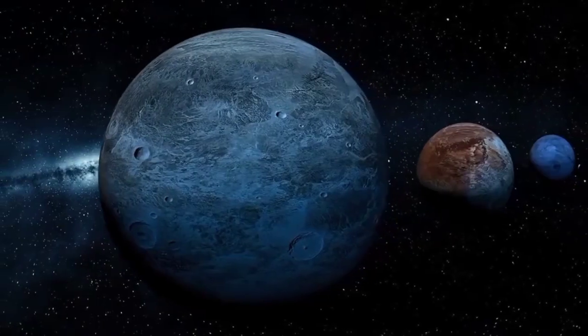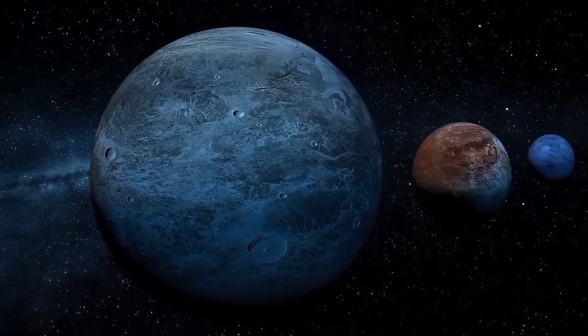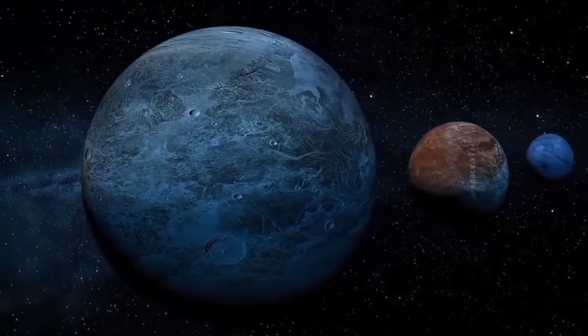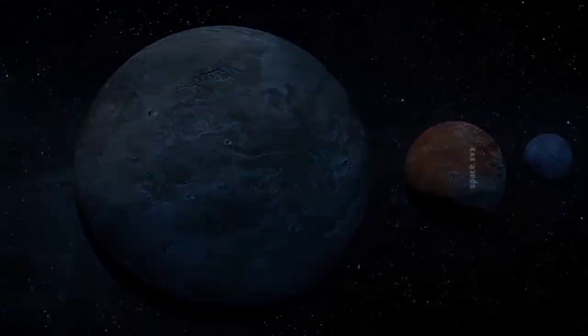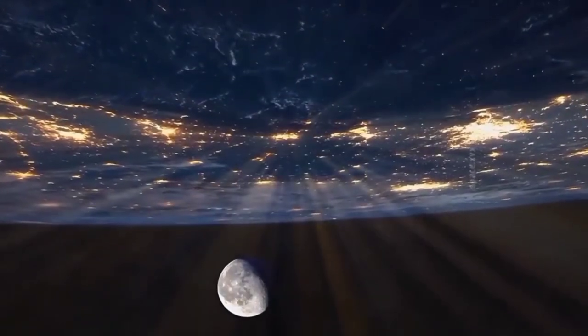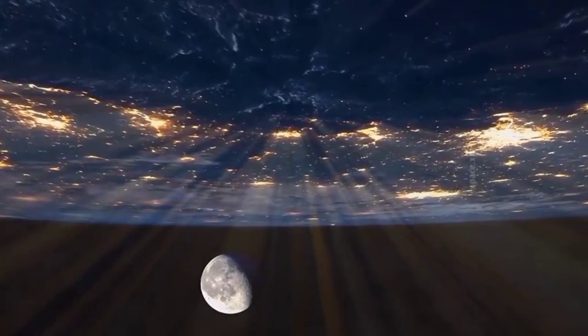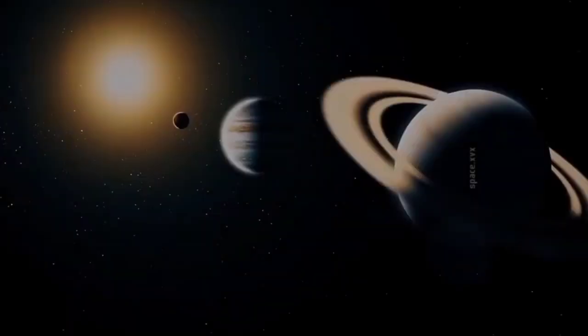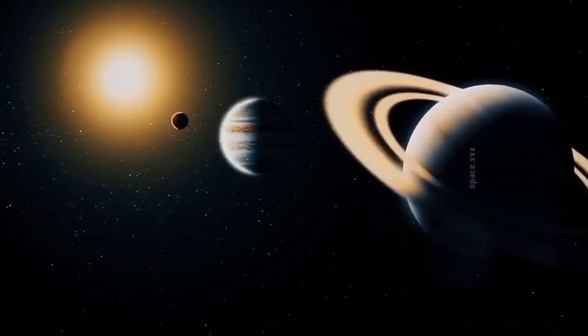The collision would release a massive amount of energy, likely obliterating Pluto due to its smaller size and icy composition. The debris from the impact could scatter across the solar system, posing a risk to other planets and their moons. For Neptune, the collision could alter its atmosphere and even affect its orbit, depending on the severity of the crash.